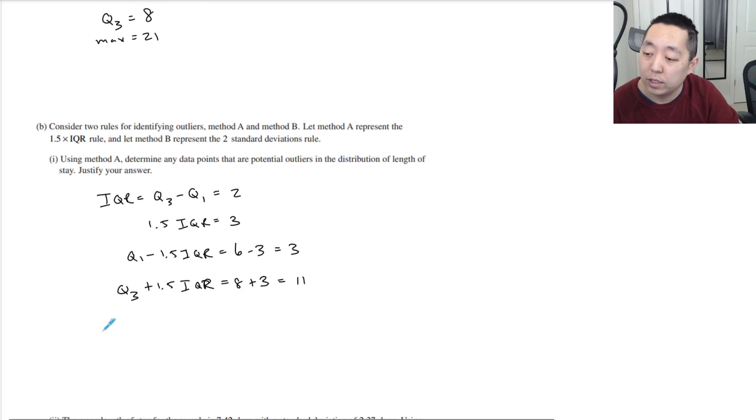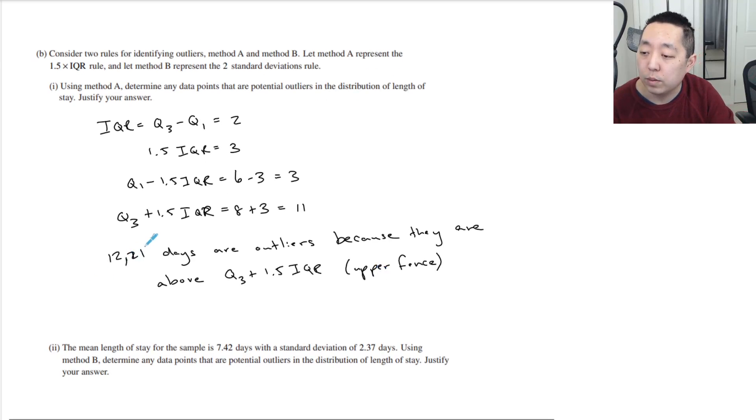So potential outliers of 12 and 21 days are outliers because they are above Q3 plus 1.5 IQR. Sometimes we call this the fence, the upper fence. Okay, so those 12 and 21, those are the outliers.